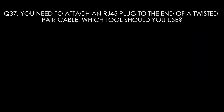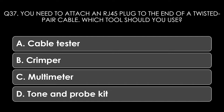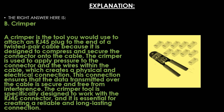Question thirty-seven. You need to attach an RJ45 plug to the end of a twisted pair cable. Which tool should you use? Options: A: cable tester, B: crimper, C: multimeter, D: tone and probe kit. The right answer is B, crimper. A crimper is the tool used to attach an RJ45 plug to a twisted pair cable — it is designed to compress and secure the connector onto the cable by applying pressure to the connector and the wires, creating a physical and electrical connection that ensures data transmitted is secure and free from interference.